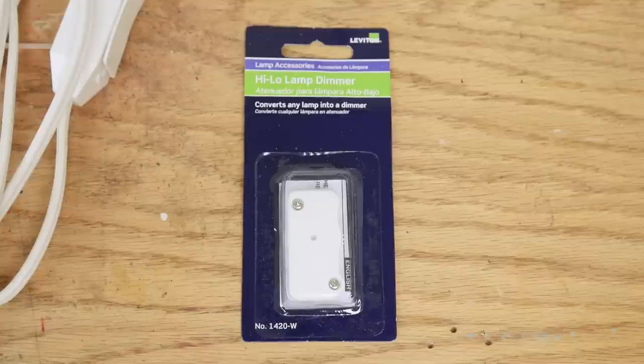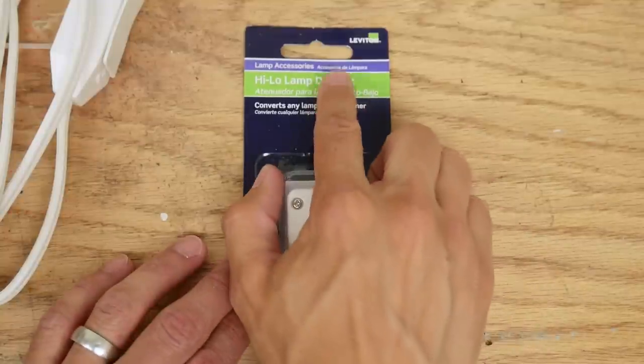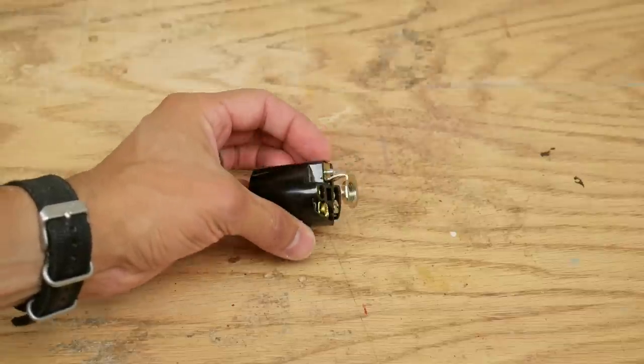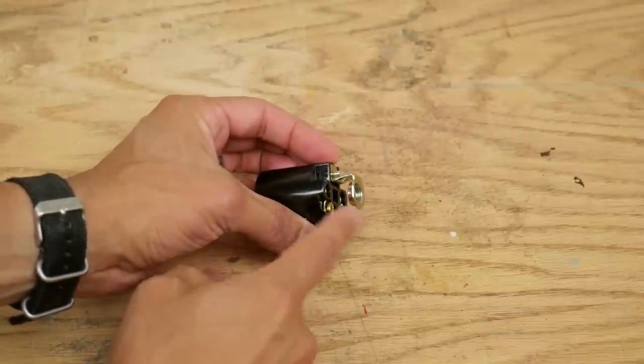You can buy lamp cords with switches built in, but they usually don't have a high and low setting like this one does. The lamp socket I got had an extra little part that I didn't need, so I removed it.